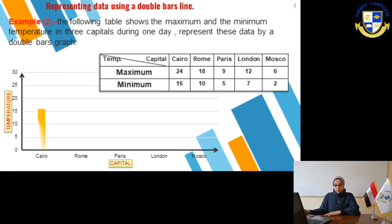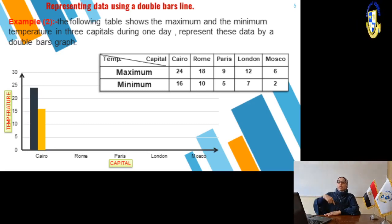At first, draw the horizontal axis to represent the capitals - all the capitals which we have in this table. And the vertical axis shows the temperature. First, Cairo. We'll go to the Cairo and draw a bar till 24. And this is the maximum. And the minimum behind it exactly till 16. So, we have now two bars - double bars for Cairo.